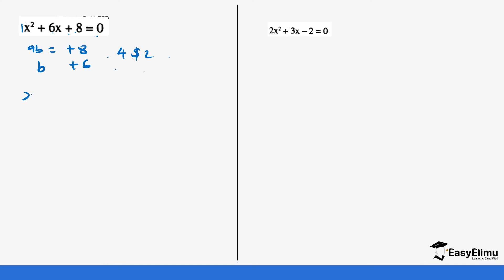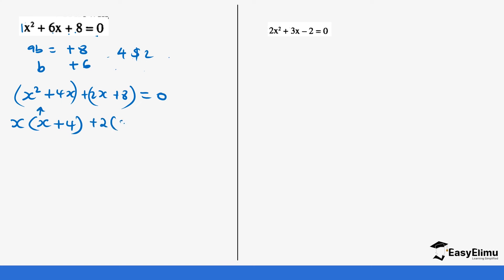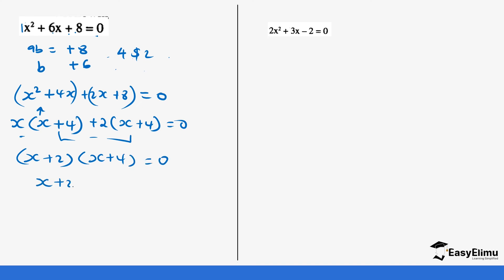We open this equation, so it becomes x squared plus 4x plus 2x plus 8 equals zero. We group these two values — the common value here is x, giving x plus 4. So it's x(x plus 4) plus 2(x plus 4). You see the values in the bracket are the same, which tells me the equation is good. So it's (x plus 2)(x plus 4) equals zero. This tells us x plus 2 equals zero and x plus 4 equals zero, so x₁ is negative 2 and x₂ is negative 4.